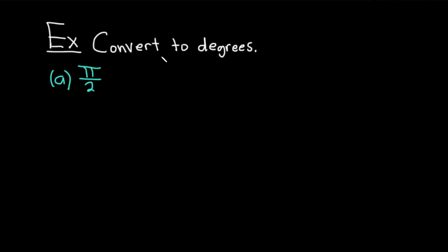Here is our next example. We have to convert to degrees, and part a is pi over 2. So, this is given in radians. Solution.